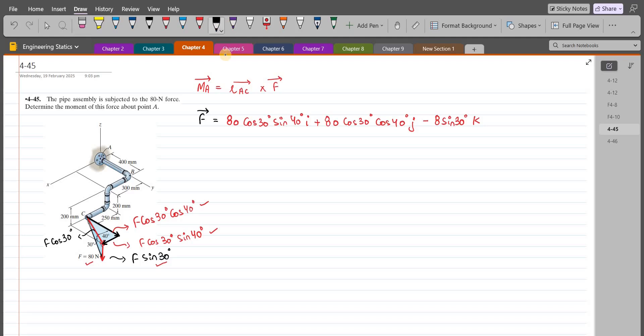So upon simplification we would have 44.53 i plus 53.07 j minus 40 k.